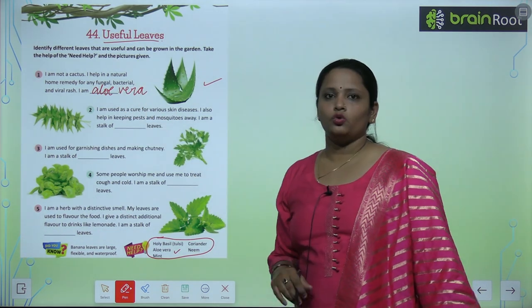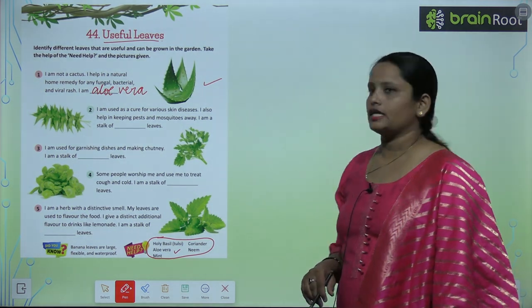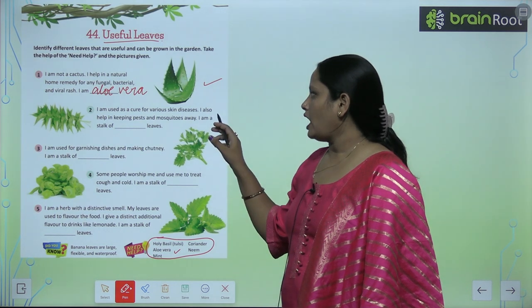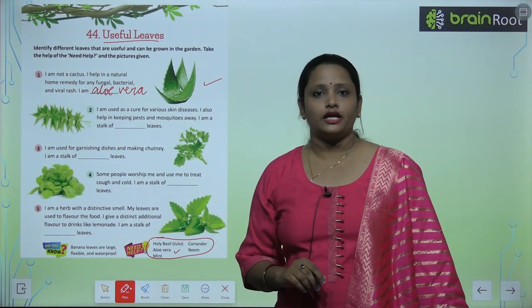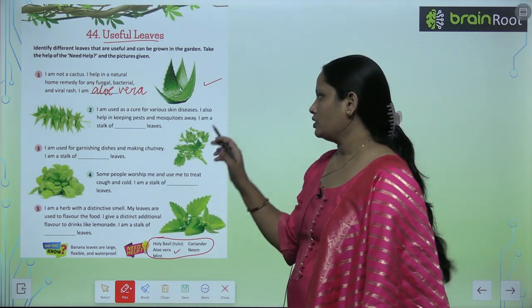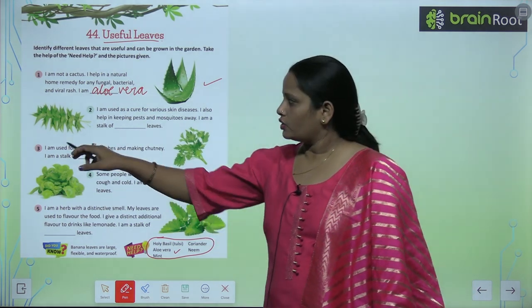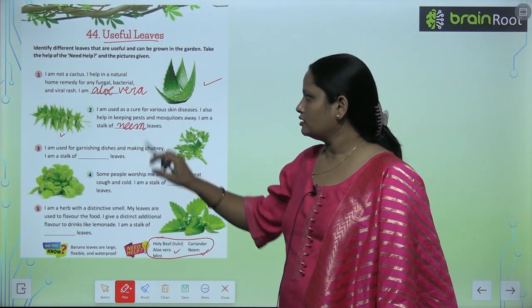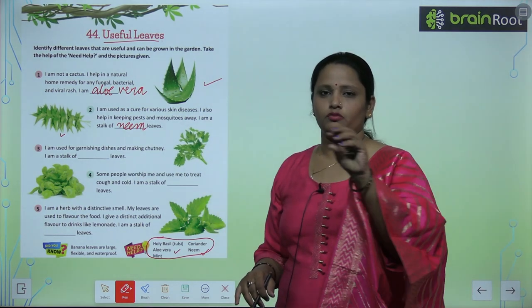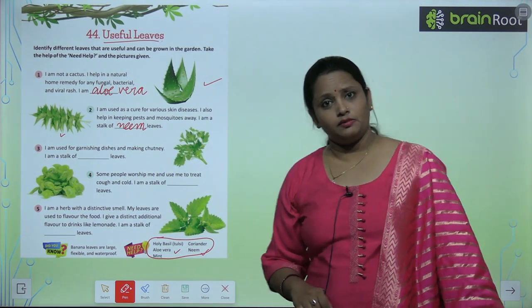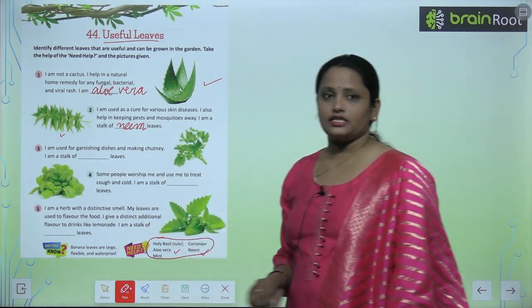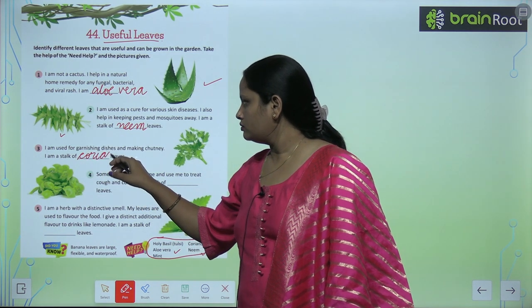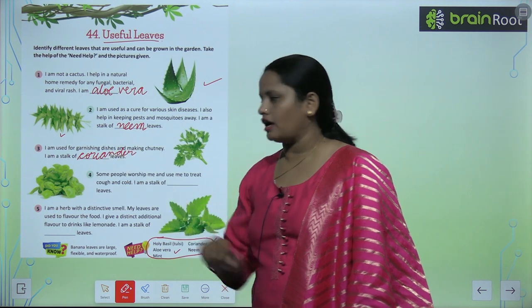Next is: I am used as a cure for various skin diseases. I also help in keeping pests and mosquitoes away. I am a stock of curry leaves. I am used for garnishing dishes. Yeah, clear children.